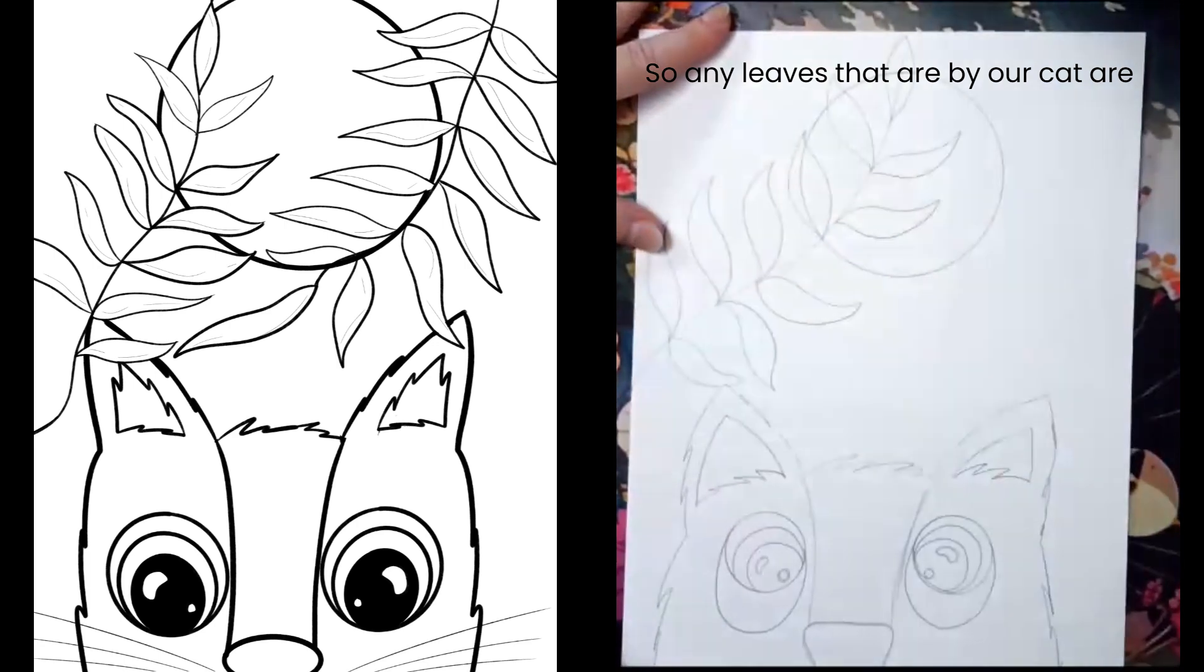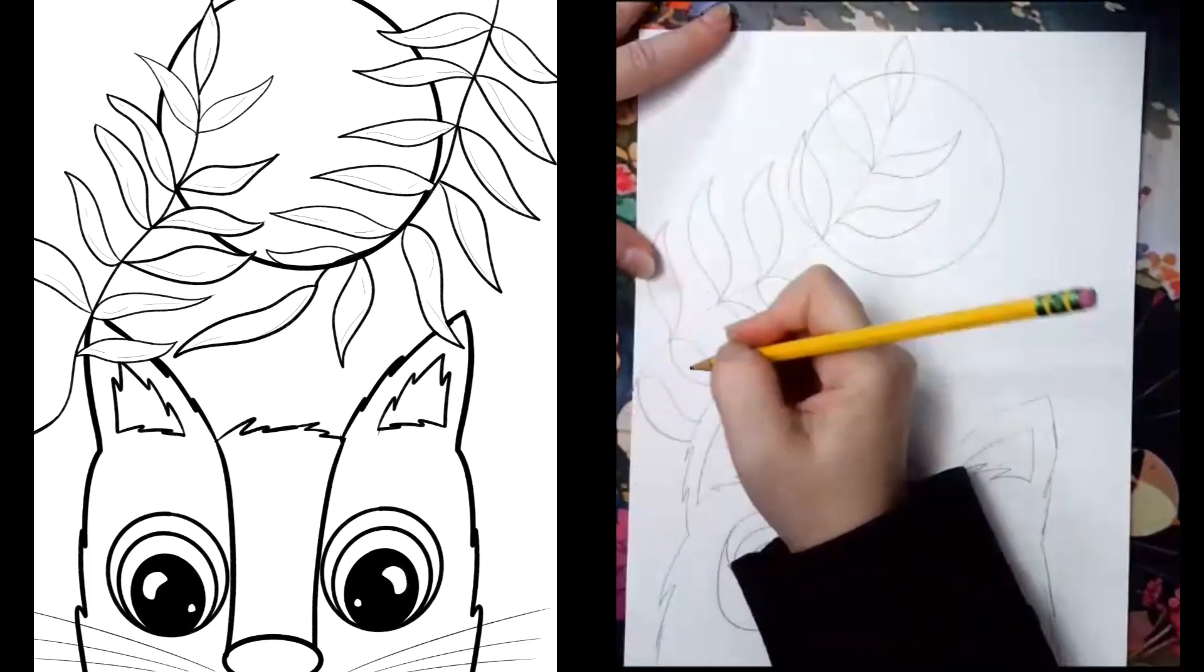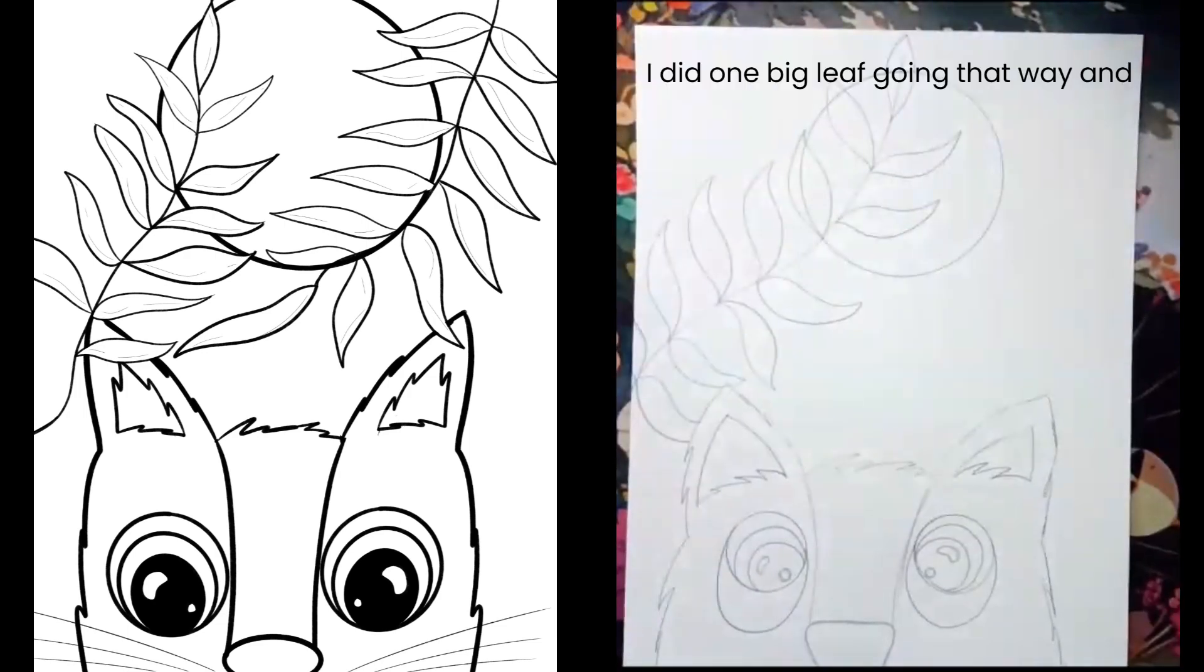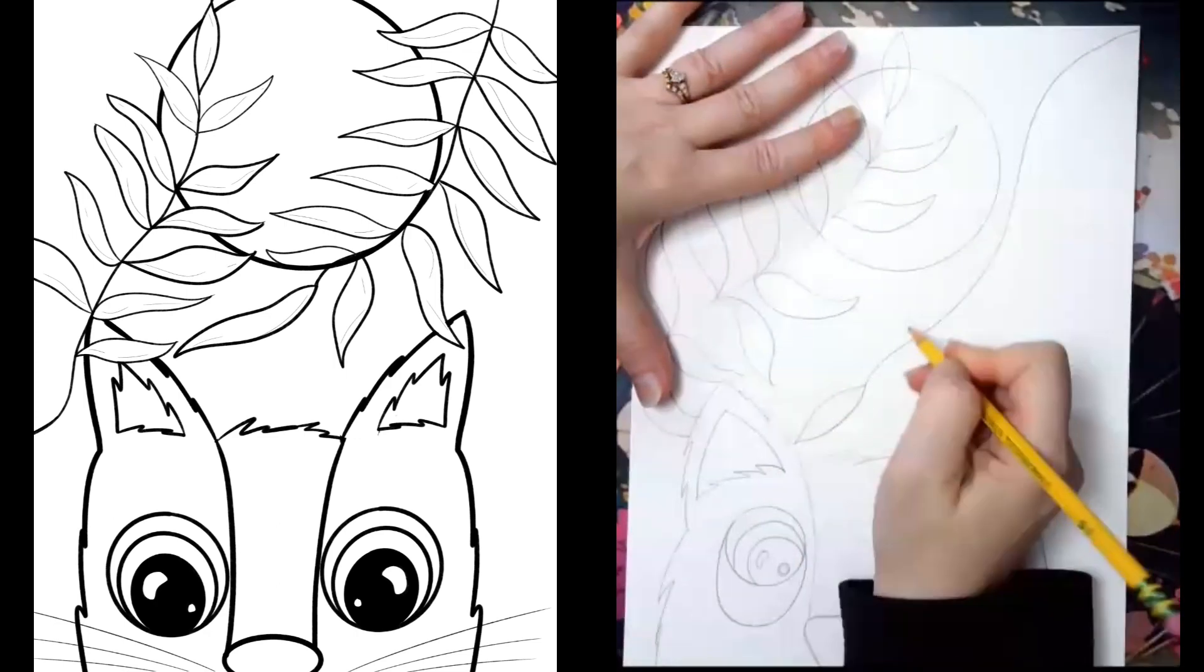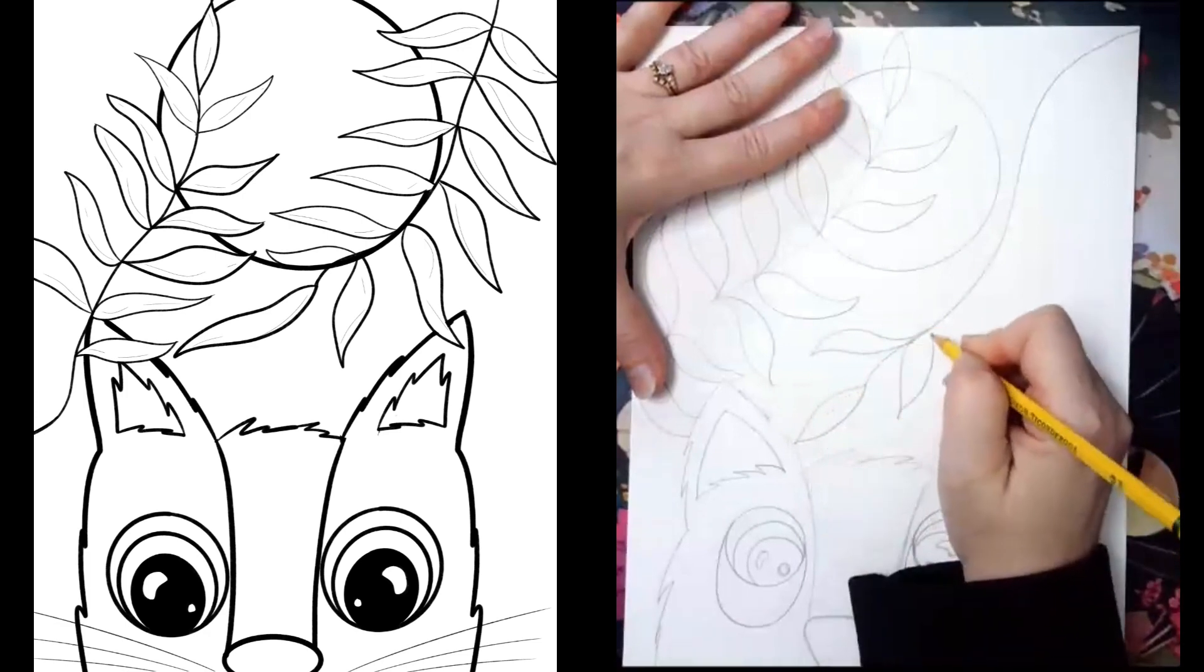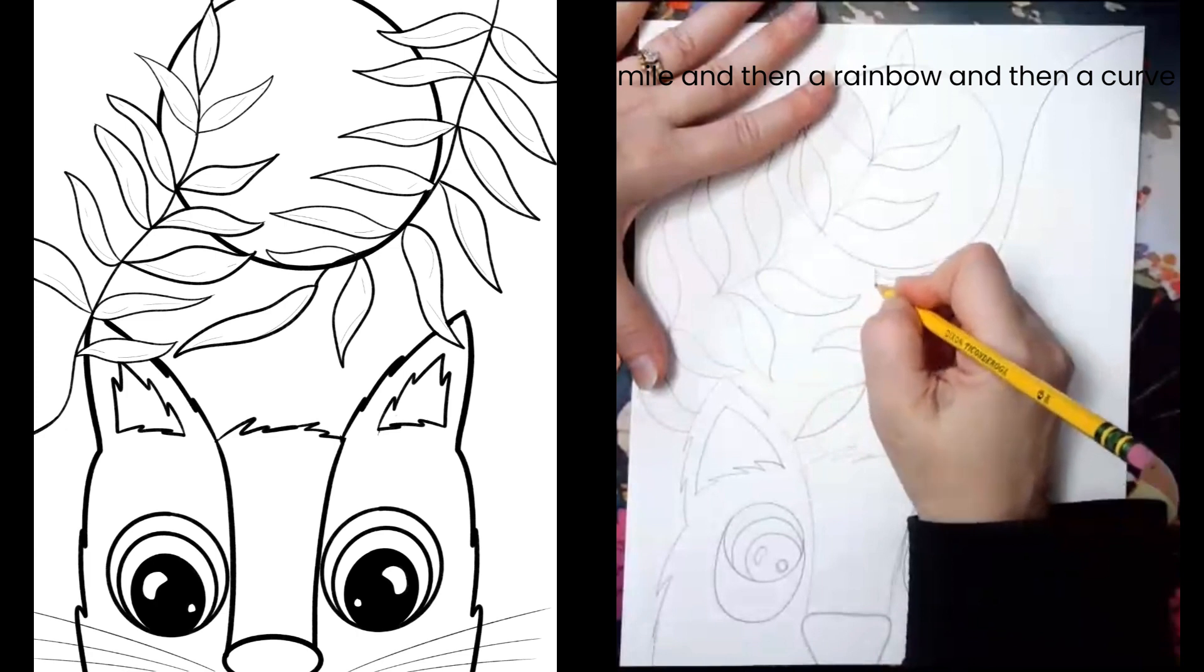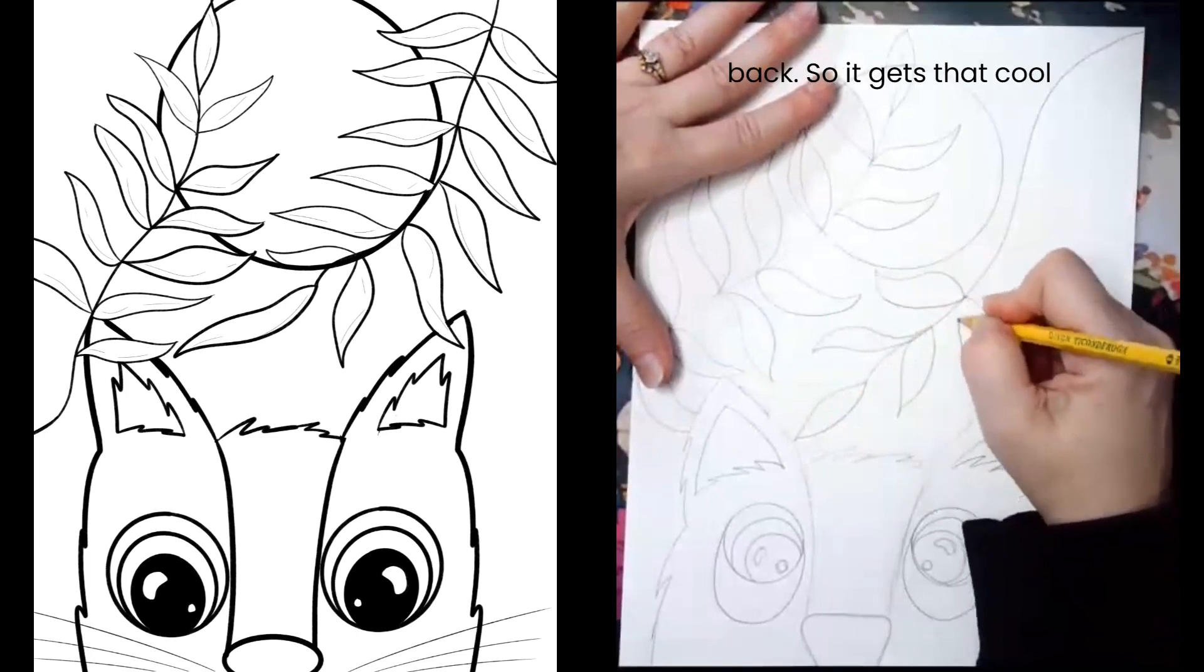So any leaves that are by our cat are going to go behind the cat. I did one big leaf going that way and then the other one I had coming from this corner. For my leaves, I like to do almost like a smile and then a rainbow and then a curve back, so it gets that cool point.